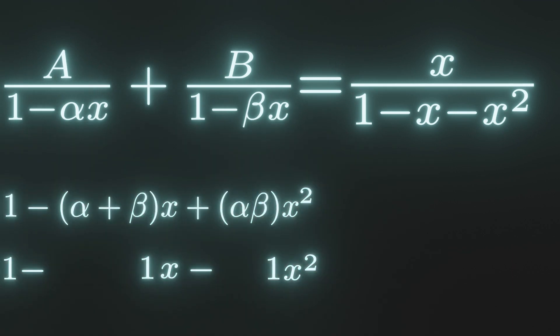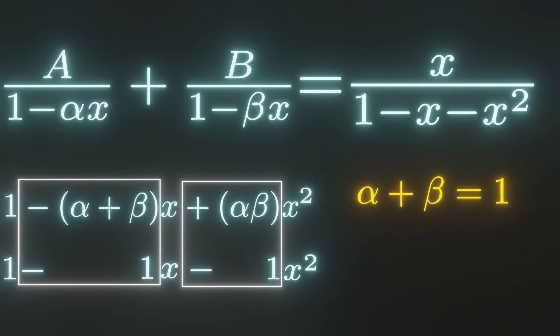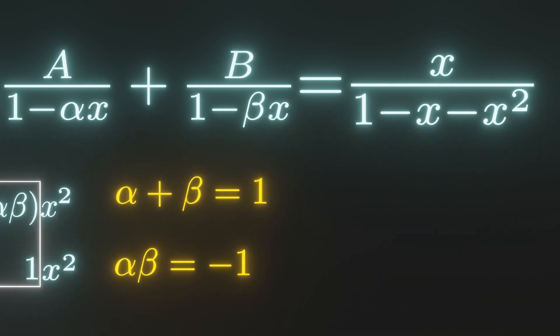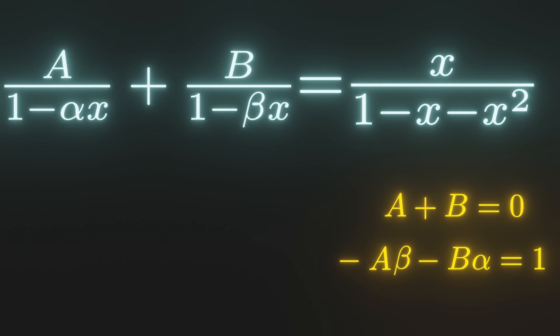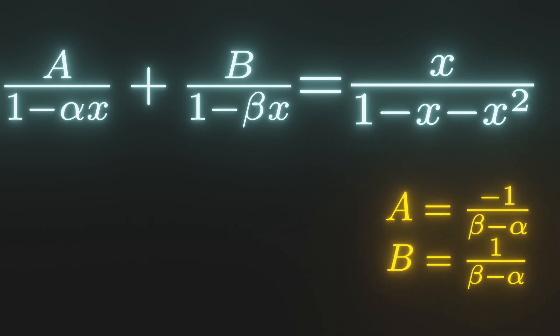We can multiply out the bottom to get alpha plus beta is equal to 1, and alpha times beta is equal to negative 1. We can multiply out the top to get the following relations. a plus b is equal to 0, and negative a times beta minus alpha times b is equal to 1. We can use these to get that a is equal to negative b.